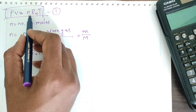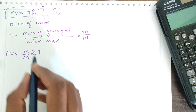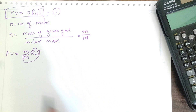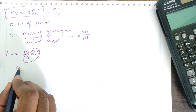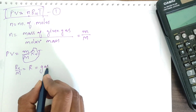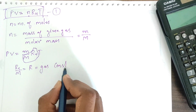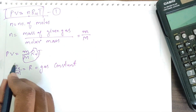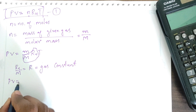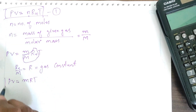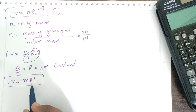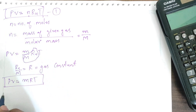Replacing N with m/M, we get PV = (m/M) × R_U × T. Now R_U divided by molecular mass M is called the specific gas constant R. So PV = mRT, which is another form of the ideal gas equation, where m is the mass of the gas and R is the specific gas constant.